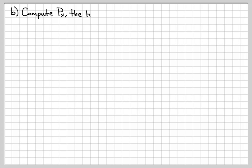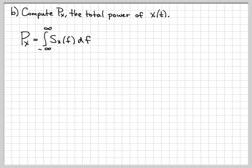In part B, let's go ahead and compute the power Px, the total power of our signal x(t). This is easy to do now that we know what the PSD is. The power of a signal is always equal to the integral of its power spectral density. So this equation is always true: p(x) is equal to the integral from minus infinity to infinity of the power spectral density of x over all frequencies.